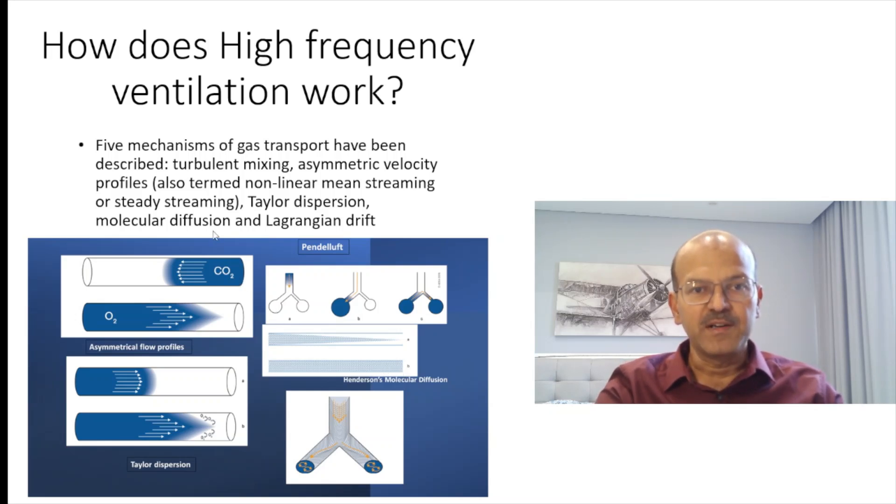We also have Langrangian drift where the position of the gas molecule changes. This reflects turbulence. The pendulift effect is where there is a differential time constant of different parts of the airway. For example, here the time constant is short and the alveolus fills up quickly. Here the time constant is relatively longer and it's still not filled. So this time constant which is shorter, the lung inflates and starts exhaling, and during the exhalation phase part of the gas instead of going out goes into the other part of the lung with a longer time constant. This heterogeneity of the lung is manifested and the pendulift effect may help with gas diffusion as well.